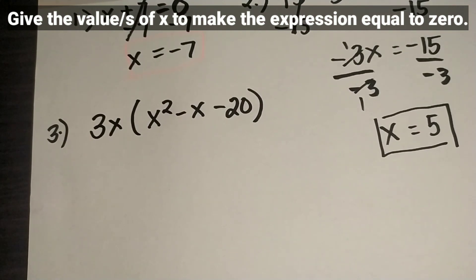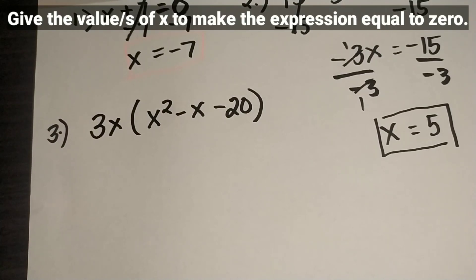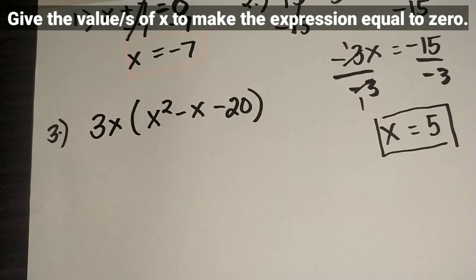Number 3. The given is 3x times the quantity x squared minus x minus 20. Notice we have two factors here: the first factor is 3x, and the second factor is x squared minus x minus 20. But the second factor can still be factored again using general trinomial, giving us two more factors. This means there will be three values of x.